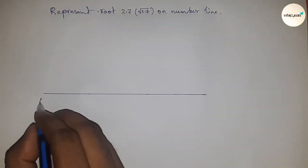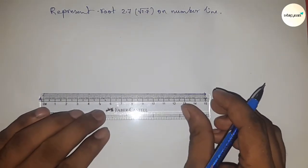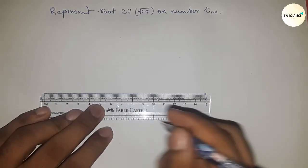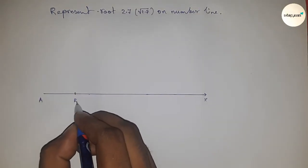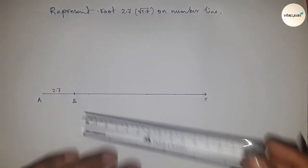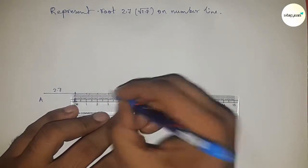First of all, draw a line AX. Next, take a distance of 2.7 centimeter using a scale. This is 2.7 centimeter and this is point B, so AB equals 2.7 centimeter. Next, we have to mark all the numbers from B to X.